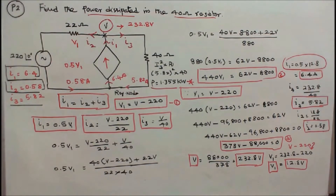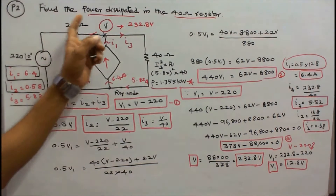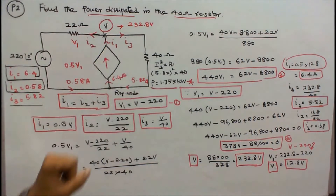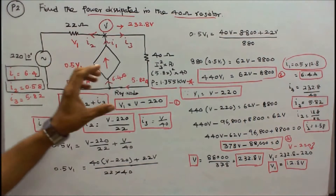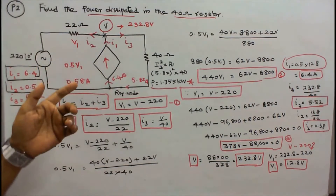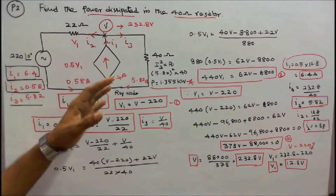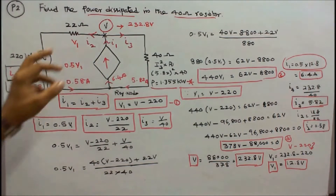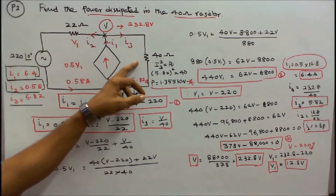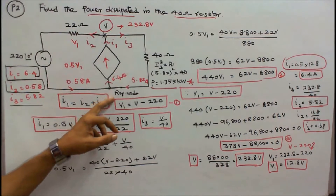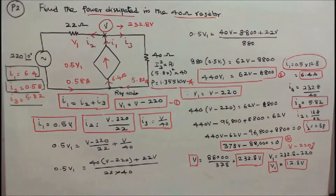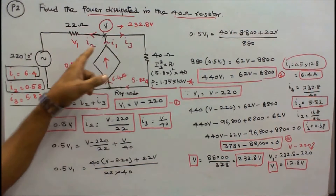Problem number 2: find the power dissipated in the 40 ohm resistor. The circuit consists of one independent voltage source, one dependent current source, and two resistors: 22 ohms and 40 ohms. This is the reference node; the node voltage is V, with currents labeled I1, I2, and I3.